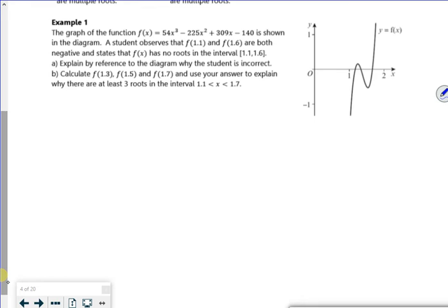So it says now, the graph of the function is shown. So the student observes that f(1.1) and f(1.6) are both negative, and states that there are no roots. So where do we think 1.1 is on this dodgy picture? Do we think 1.1 is there, and 1.6 is about there? So explained by reference to the diagram why the student's incorrect.